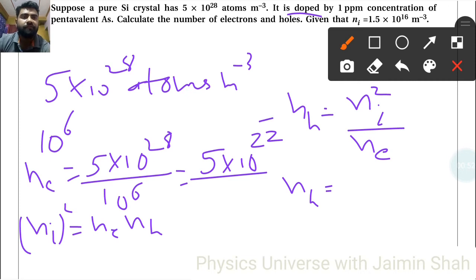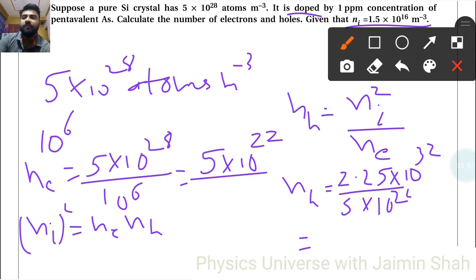ni is given as 1.5×10¹⁶. Squaring that: 1.5 times 1.5 equals 2.25×10³². And ne we have as 5×10²². So nh equals 2.25×10³² divided by 5×10²², which equals 0.45×10¹⁰. That is the number of holes in our semiconductor.